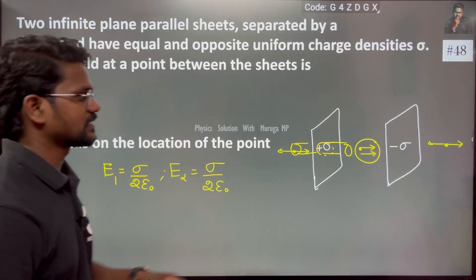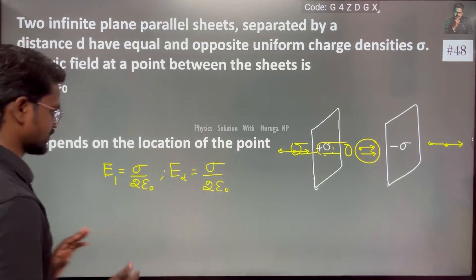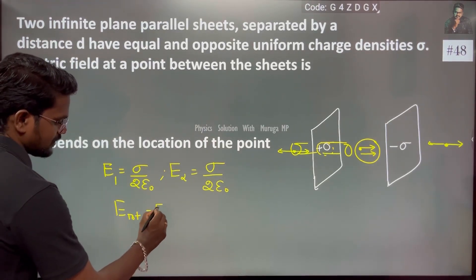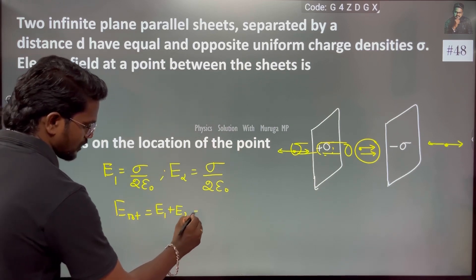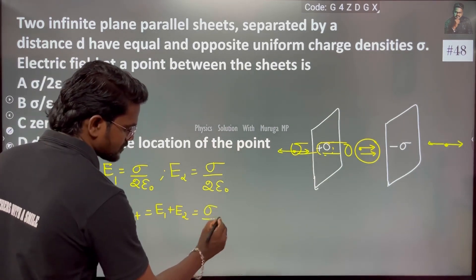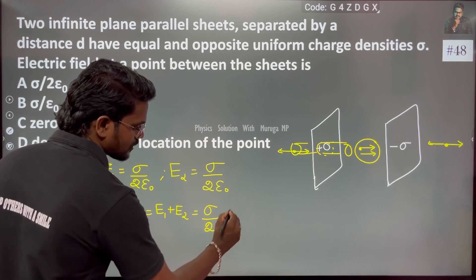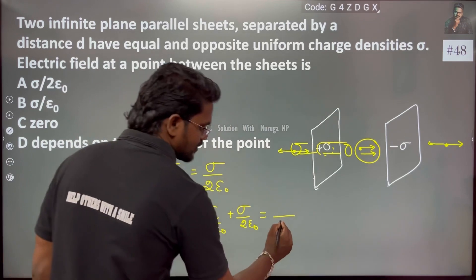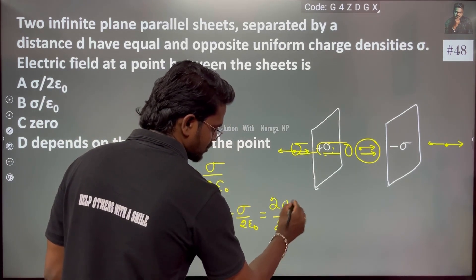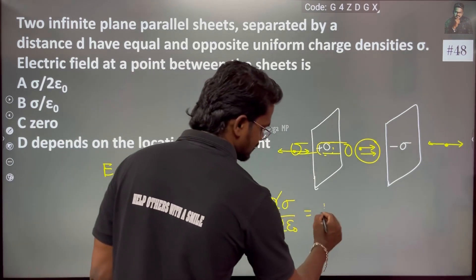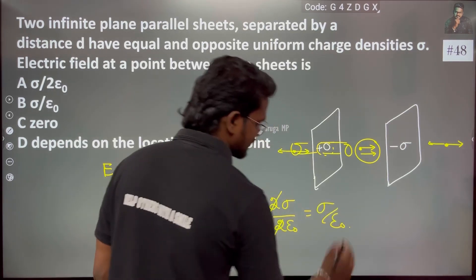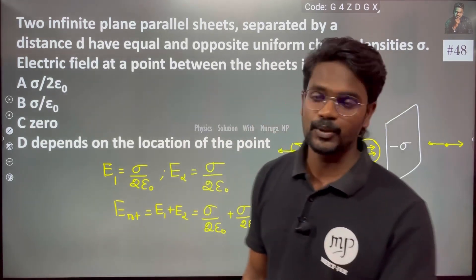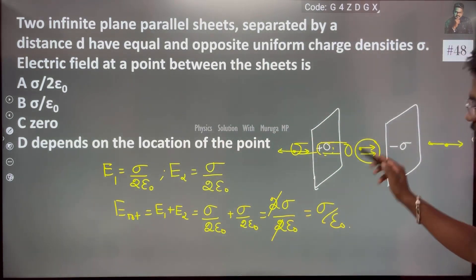We are going to add towards that side, the total electric field. E_total = E1 + E2, which is nothing but σ/2ε₀ + σ/2ε₀. Like a fraction, 2ε₀. We add 2σ and 2 will get cancelled, so the value is σ/ε₀. This is the total electric field at the center.